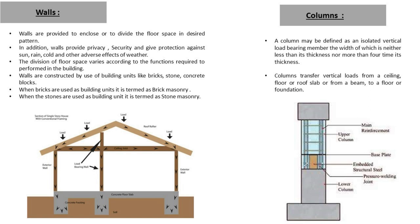Now talking about columns: a column may be defined as an isolated vertical load-bearing member, the width of which is neither less than its thickness nor more than four times its thickness. A column transfers vertical load from ceiling, floor, roof, or slab — or from a beam — to the floor or foundation.